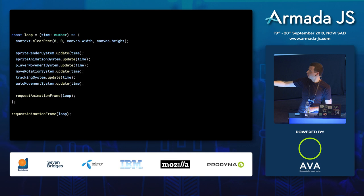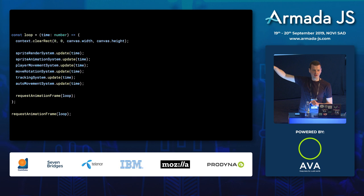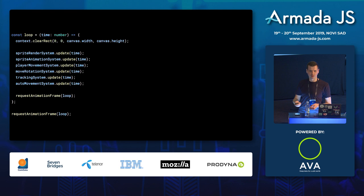Going back to our game loop — this is why we had all those references to updating systems. You kick off the game loop, receive the time, clear the output, and then for each system — sprite rendering, sprite animation, player movement, etc. — you update all of these.